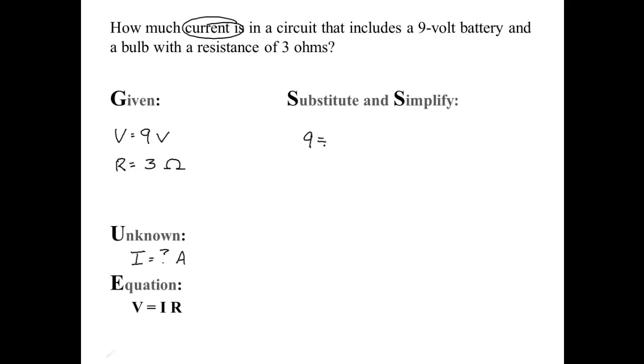9 equals, I don't know what I is, but I do know what R is. And so how do I get I all by itself on the right or the left-hand side?